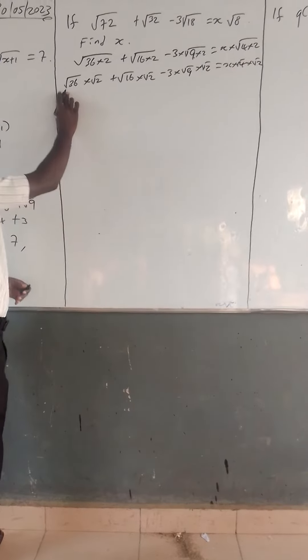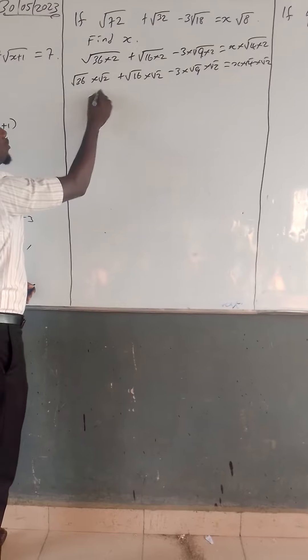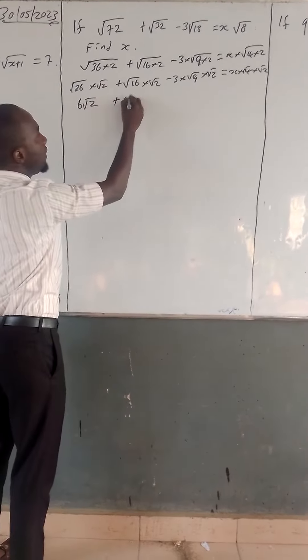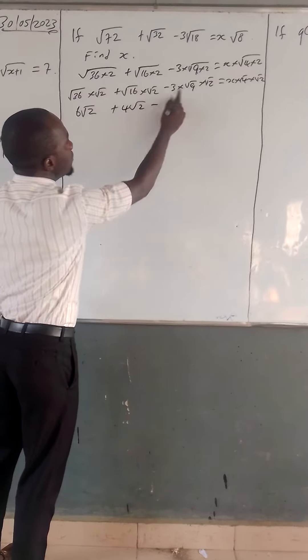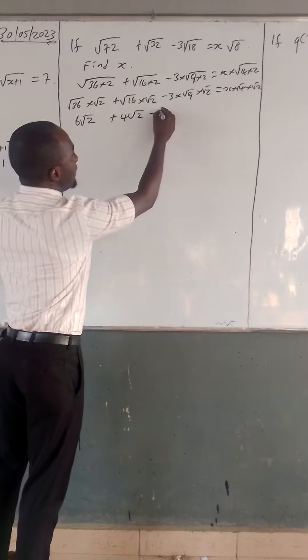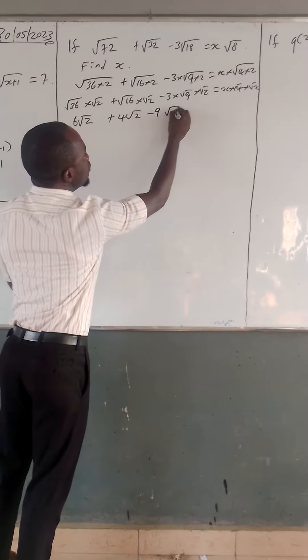So square root of 36 is 6, 6 times root 2 equals 6 root 2. Now square root of 16 is 4, 4 root 2. Minus square root of 9 is 3, 3 times 3 is 9, which is minus 9 root 2.